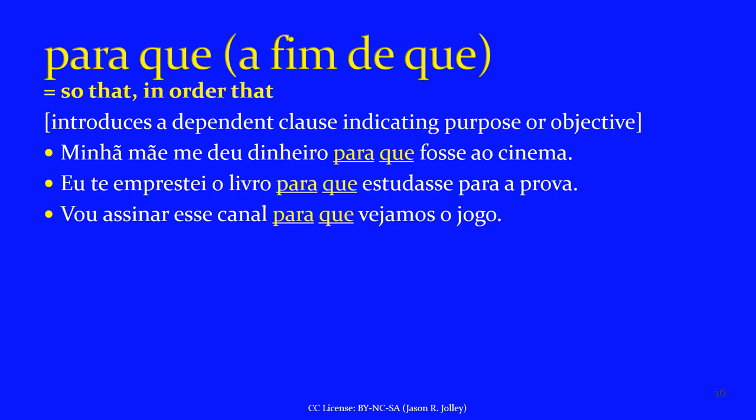The next subordinating conjunction is PARA QUE or A FIM DE QUE. If you speak Spanish, this will be familiar: it means 'so that' or 'in order that.' It also introduces a clause with the verb in the subjunctive. PARA QUE introduces a dependent clause indicating purpose or objective. 'Minha mãe me deu dinheiro para que fosse ao cinema' — she gave me money so that I could go to the movies. 'Eu te emprestei o livro para que estudasses para a prova' — so that you would study for the exam. 'Vou assinar esse canal para que vejamos o jogo' — I'm going to subscribe to that channel so that we can watch the game.